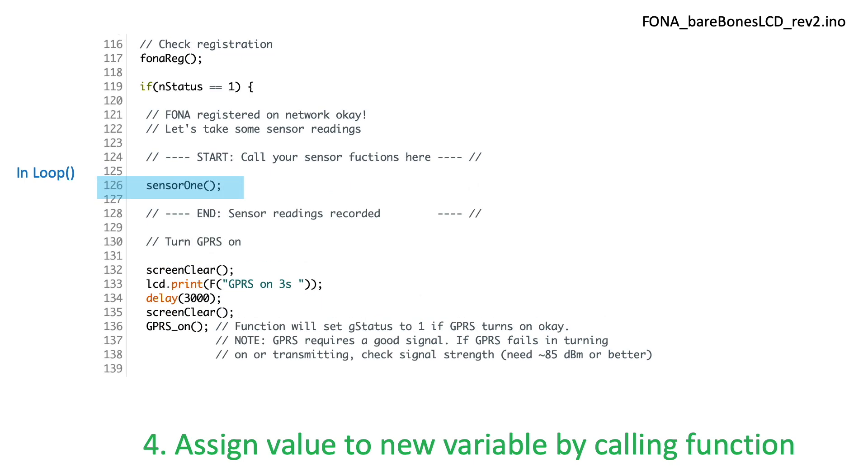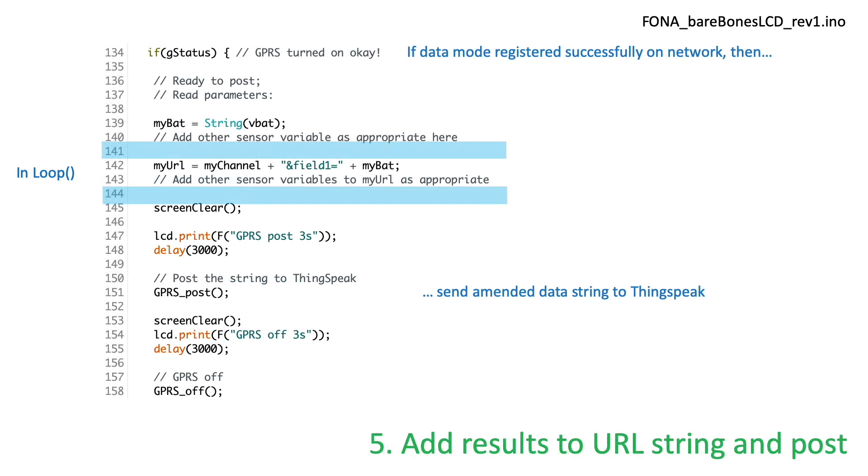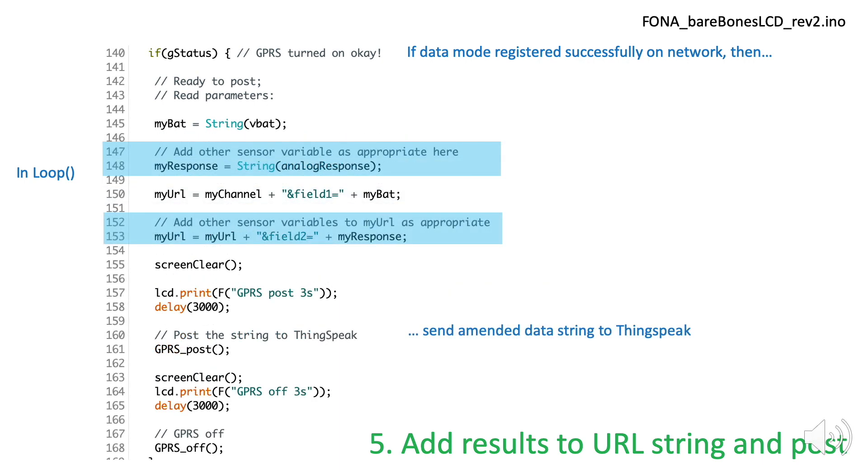The sensor will be engaged via the sensor1 function I authored only if the conditionals checking on my phone registration status are good. Otherwise, there's no point in me taking a reading. Finally, I'll need to add the results to my URL string for posting to Thingspeak. I do this by converting the analog response variable to the string variable called myResponse and then adding myResponse as a field value to the URL string that will be posted to Thingspeak for registering my measurement.